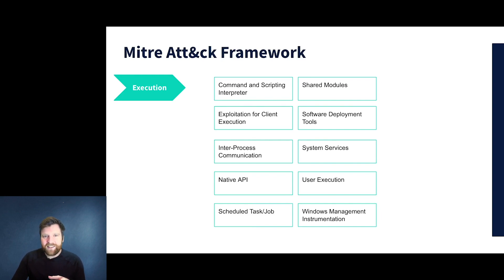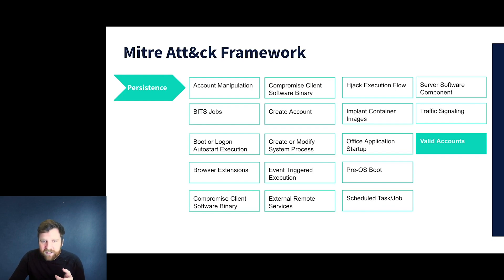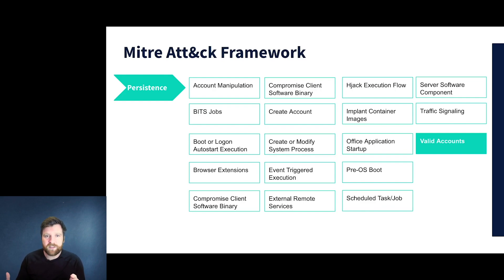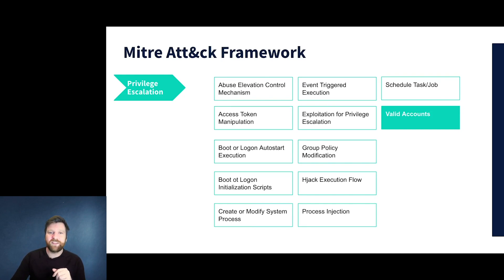For persistence, the key factor was again that they had valid accounts — that's really the only one that fits here. They could have done account manipulation and created accounts, but they didn't need to and didn't want to extend the exploit further than necessary. Privilege escalation follows the same pattern: they could have created accounts or modified settings, but they didn't need to because they were correctly authenticated within the systems.